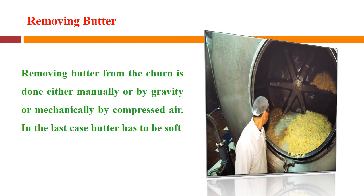After washing is over, the lump of butter mass has to be removed from the churn. This is done either manually, by gravity, or mechanically by compressed air. When compressed air is used, the butter has to be slightly soft.